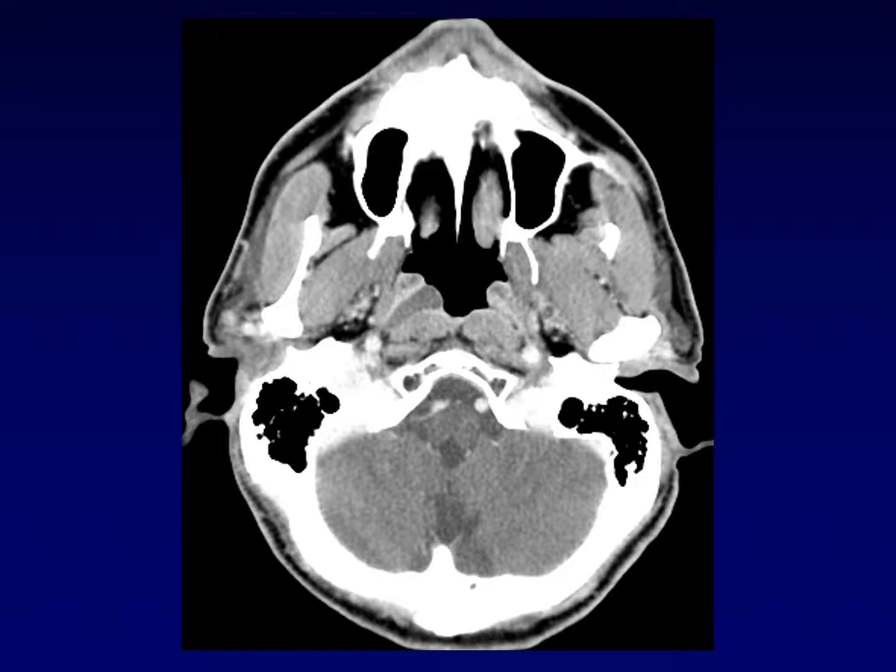Here is an example of a mucus retention cyst that happened to arise in the adenoids. In fact, it arose deep within the fossa of Rosenmuller, and as it expanded, extended out into the nasopharynx. When we see cystic masses along these mucosal surfaces, it is easy to attribute these to mucus retention cysts. Just make sure that there is no enhancing nodular component.